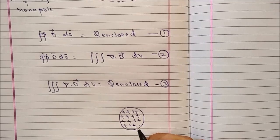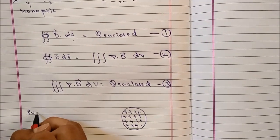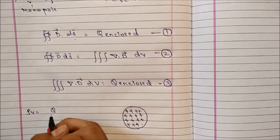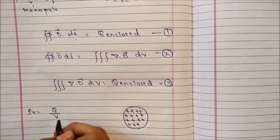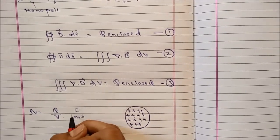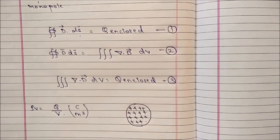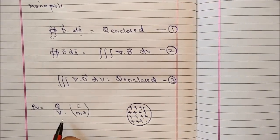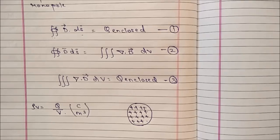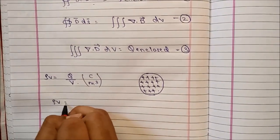Volume charge density, which is rho_V, is nothing but charge distributed over its volume in coulombs per meter cubed. Now we can use this formula to modify Maxwell's equation.